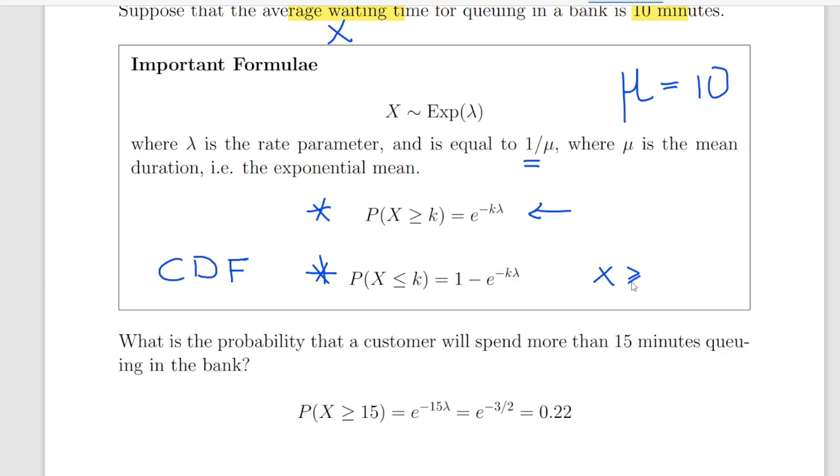So the question is, what is the probability that a customer will spend more than 15 minutes queuing in the bank? So the probability of x being greater than or equal to 15, so how do we calculate that?